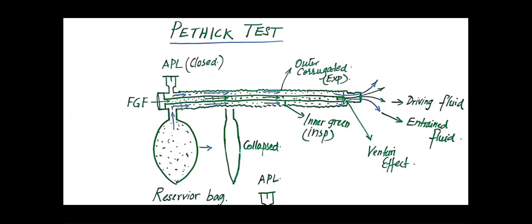Now I will explain how this Venturi principle works in this pathic test. In the fourth step of the pathic test, when we unocclude or open the patient's end of the tube and flush the circuit with the oxygen flush valve, the fresh gas passes with very high velocity through the inner tube. When it comes out at the patient's end with high velocity, it creates negative pressure, which drags or sucks the gases present in the outer corrugated tube and the reservoir bag.